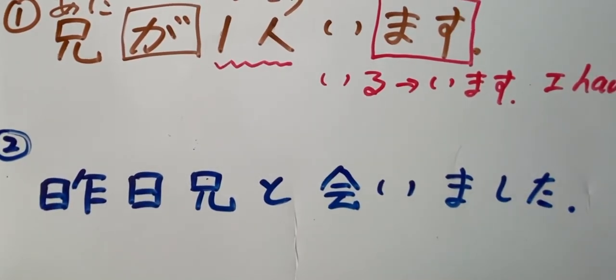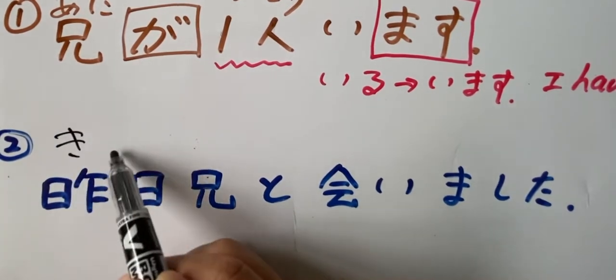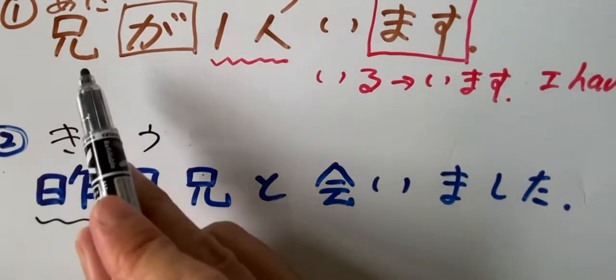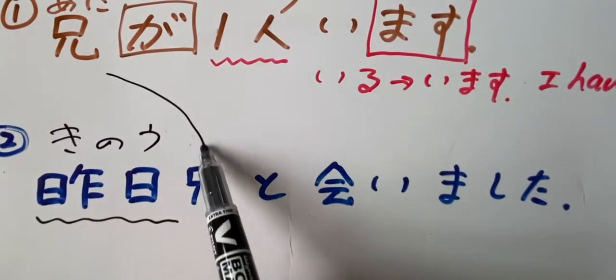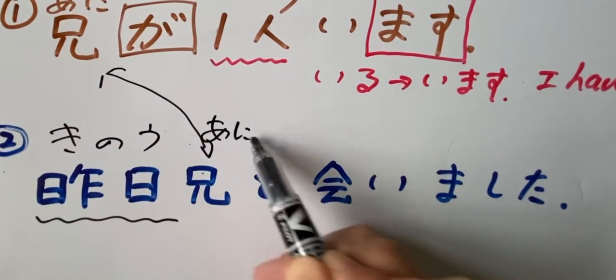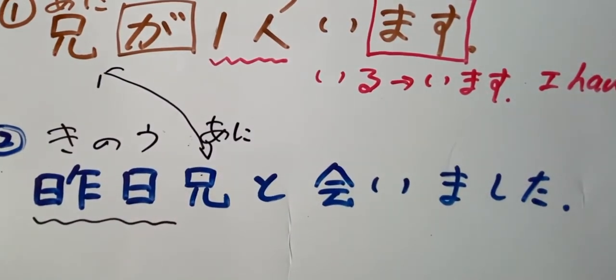Aimashita. Kino. Over here, kino. Kino, yesterday. Over here we have our ne, ani. Ne. Ani, my older brother. Right. And the...